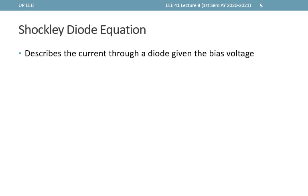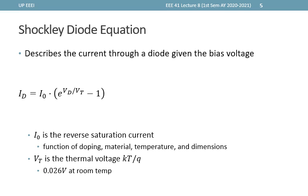The Shockley diode equation describes the current through a diode given a bias voltage and models the diode with an exponential IV characteristic. The equation is Id = I0 × (e^(Vd/Vt) − 1), where I0 is the reverse saturation current — a function of doping concentration, material properties (bandgap energy EG, lifetime tau, mobility), temperature, and dimensions. Vt is the thermal voltage equal to kT/q, and I0 also depends on temperature.